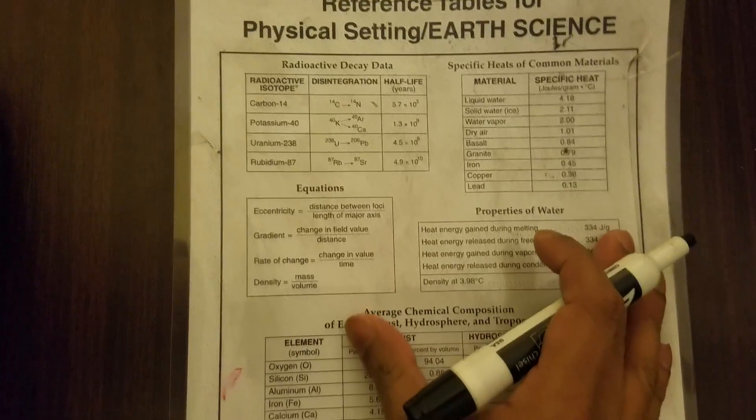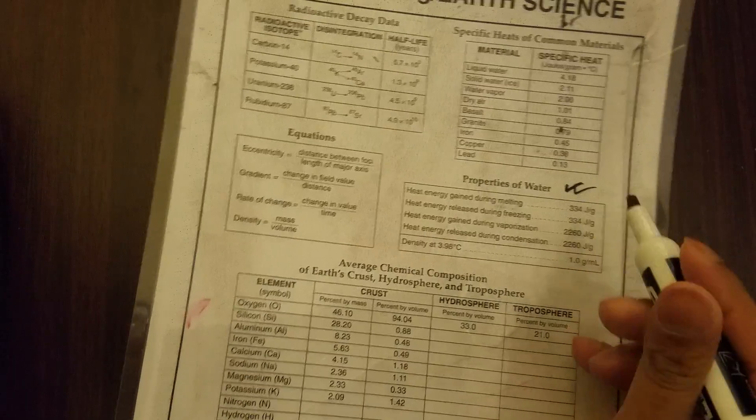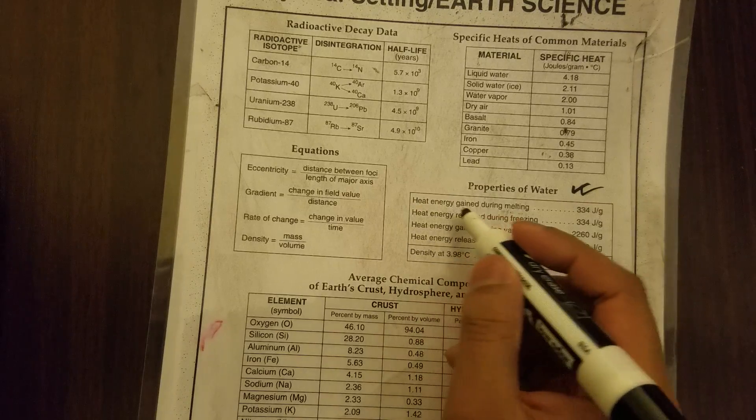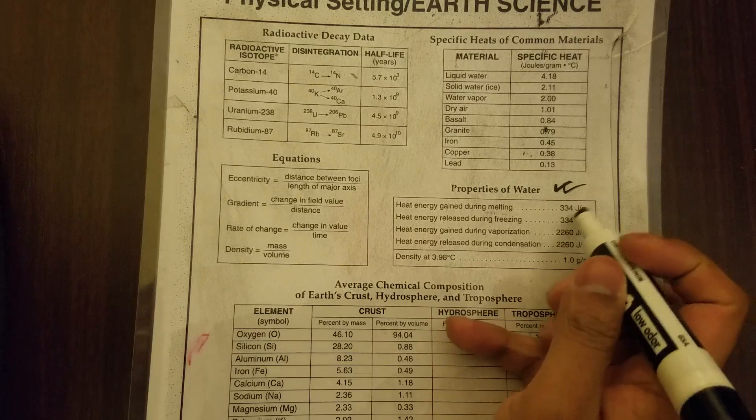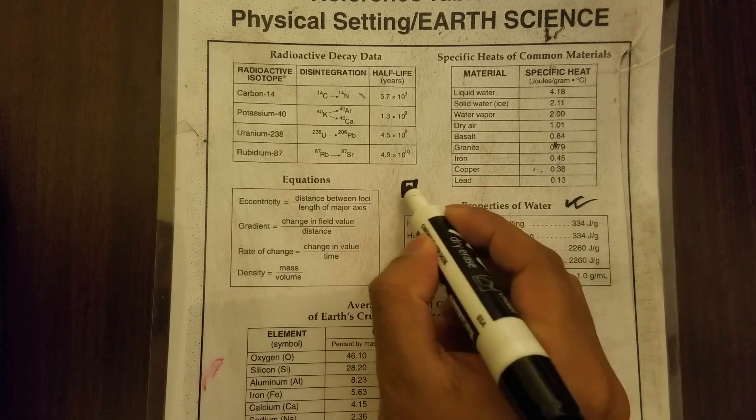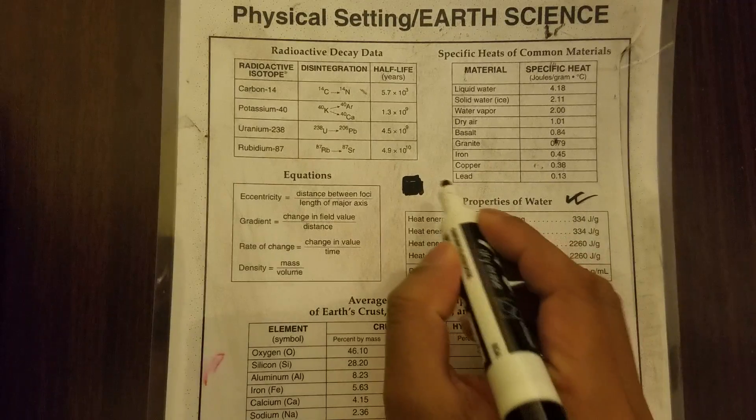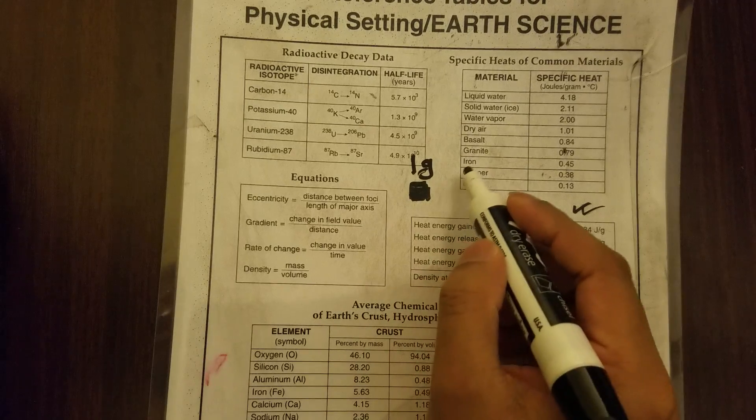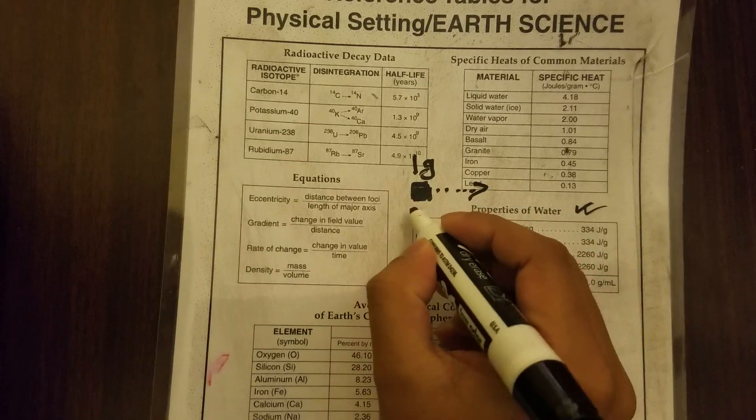Let's get started. First thing, properties of water. The first thing is heat energy gained during melting: 334 joules per gram. What it means is that if you have a small ice cube, one gram, a very small ice cube, and you are going to melt this, to melt this you obviously need to apply heat.